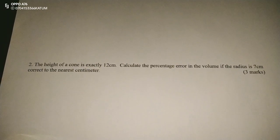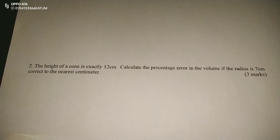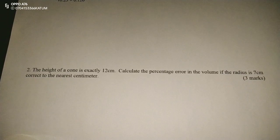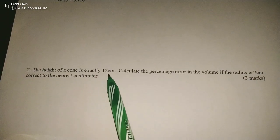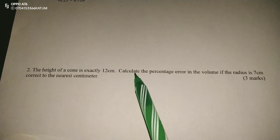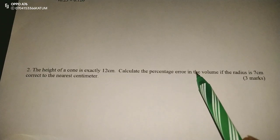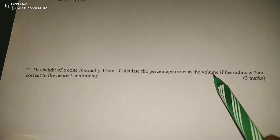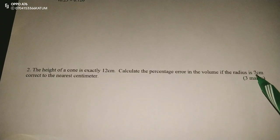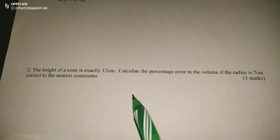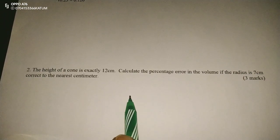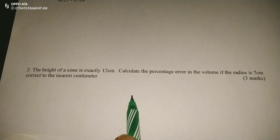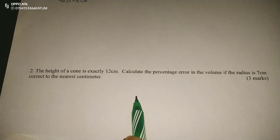Thank you for joining this lesson. We're going to discuss errors and approximations, number two. The height of a cone is exactly 12 centimeters. Calculate the percentage error in the volume if the radius is 7 centimeters, correct to the nearest centimeter. Remember to subscribe to this channel and to share the link with friends.